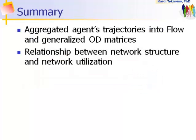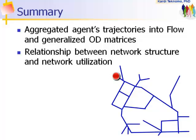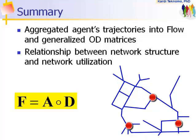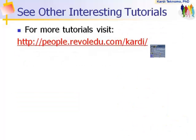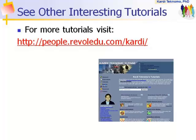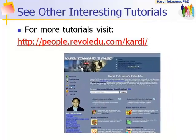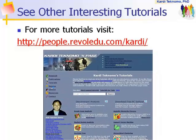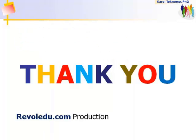Let us summarize what we have discussed so far. From the trajectories of multi-agents and the network space where these agents move, we can aggregate their movement into flow matrix and origin-destination flow matrix. By the mean of numerical example, you have learned the relationship between the utilization of the network in terms of flow matrix and OD Matrix, and the network structure in terms of adjacency matrix. In the next video, I will show you more general formula that we have discovered. I hope you enjoy this video tutorial. You can also visit my other tutorials from my website. Thank you for watching.